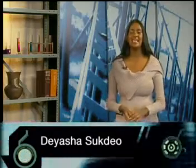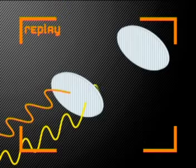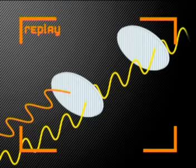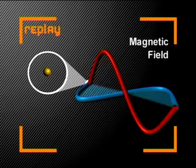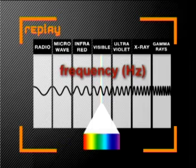Welcome to the second lesson in this series called Investigating Electromagnetic Radiation. In the previous lesson, we discovered that electromagnetic radiation has some wave properties and can be represented as two transverse waves which move perpendicular to each other. The vertical component of the wave is a changing electric field and the horizontal component is a changing magnetic field. We also noted that electromagnetic radiation can be produced with a range of frequencies to form a spectrum of different electromagnetic waves.